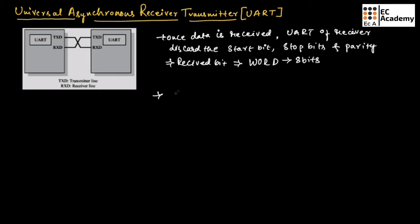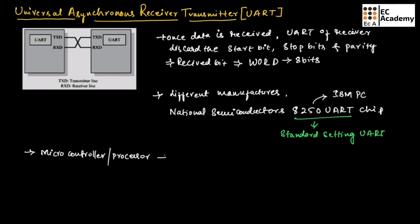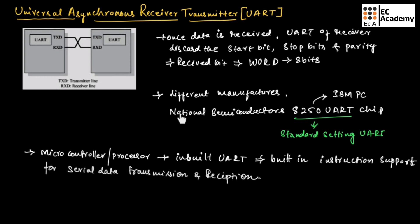UART chips are available from different manufacturers, such as the National Semiconductors 8250 UART chip, which is considered a standard UART and was used in the original IBM PCs. Nowadays, most microcontrollers or microprocessors include an inbuilt UART with built-in instruction support for serial data transmission and reception.